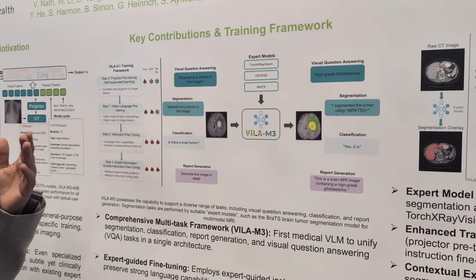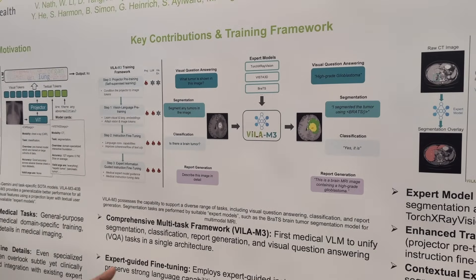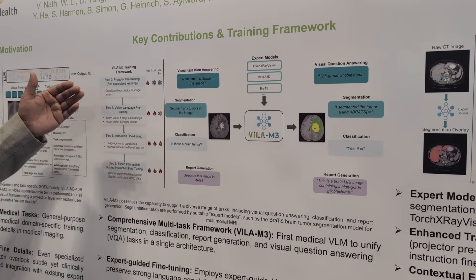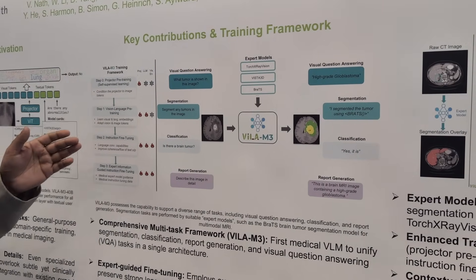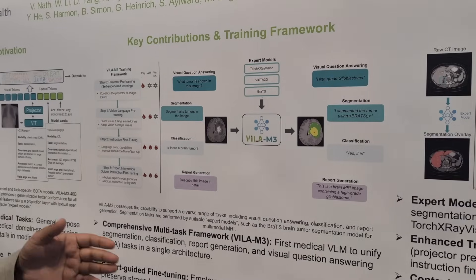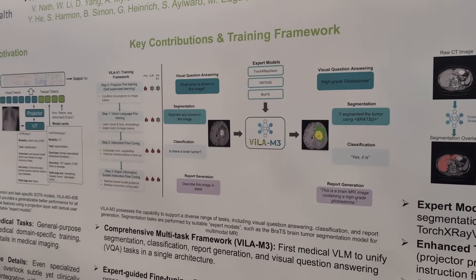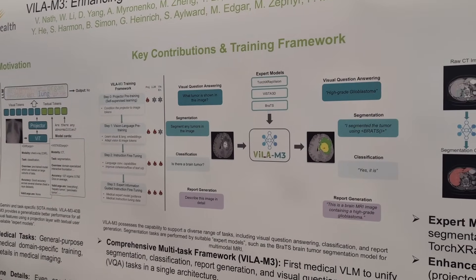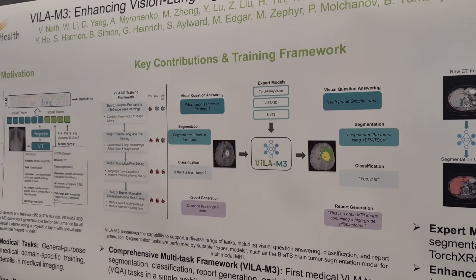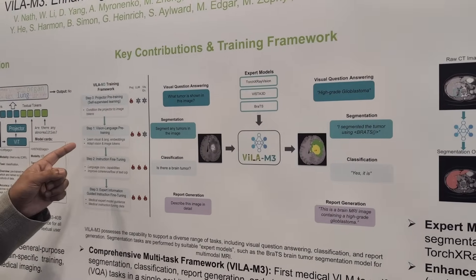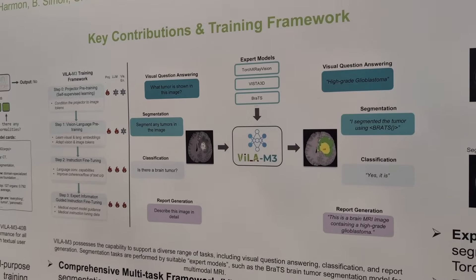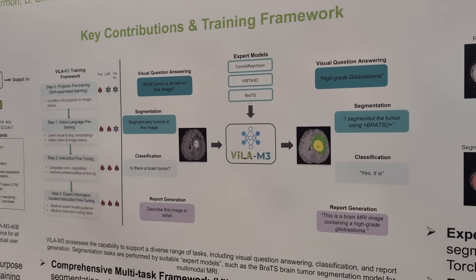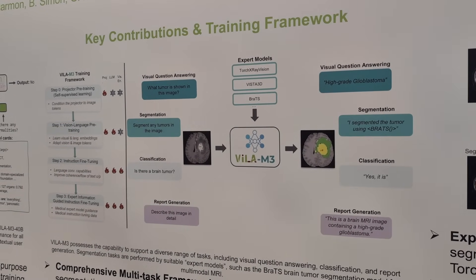The vision encoder training is very much standard — there are lots of ways like masked autoencoders. Then the second step is aligning the image and the text, which is captioning the image. That's the most massive compute. For healthcare, very large datasets for pre-training don't exist yet.